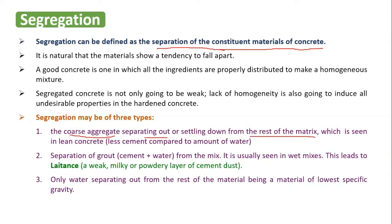The first type is when the coarse aggregate separates out from the rest of the matrix. The matrix is nothing but cement plus fine aggregate plus water. So coarse aggregate is being separated from the matrix — cement, fine aggregate, and water — which is seen in lean concrete.